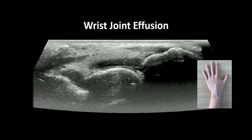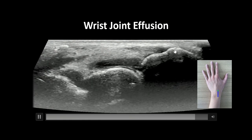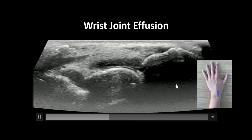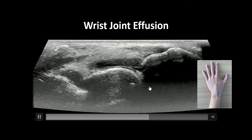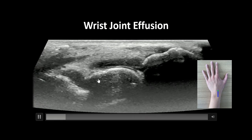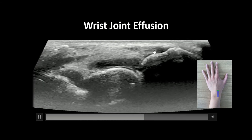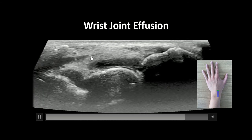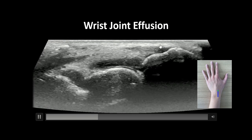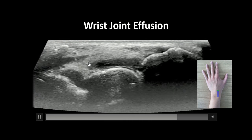In this clip we can appreciate the distal radius as a hyperechoic line with posterior shadowing. The scaphoid can be seen here adjacent to the distal radius. An extensor tendon of the wrist can be seen as a fibrillar structure with multiple parallel lines crossing the joint space.